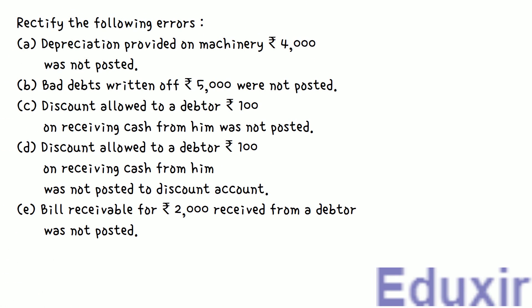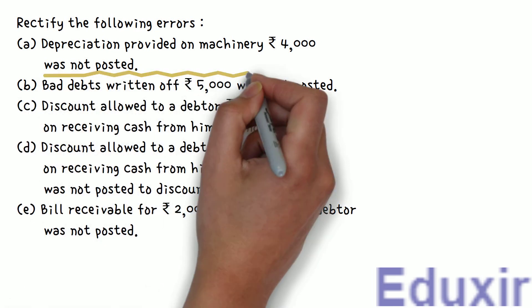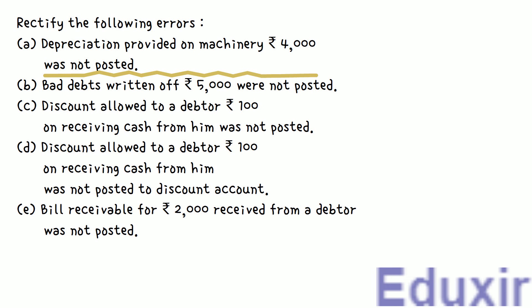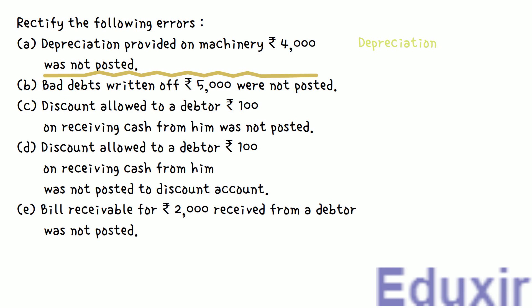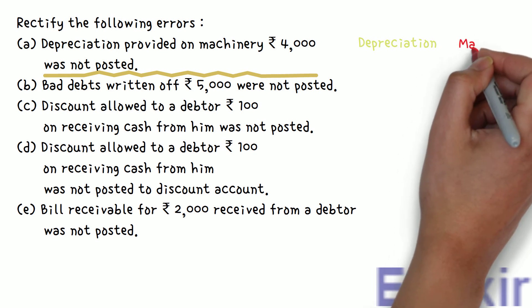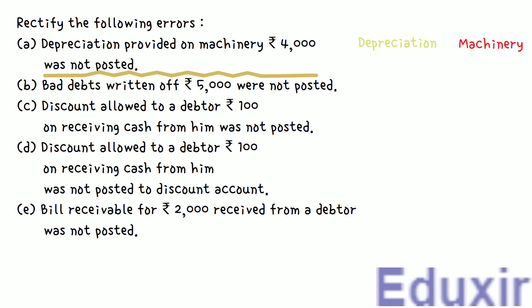Let us start with the analysis of the first error. Depreciation provided on machinery was not posted. Depreciation is an operating expense, so we should debit the depreciation account. At the same time, as the machine is depreciated, the worth of the machine will be decreasing. So, as the asset value is decreasing, we should credit the machine account. However, this depreciation was not posted, so to rectify this error, we should post these entries.